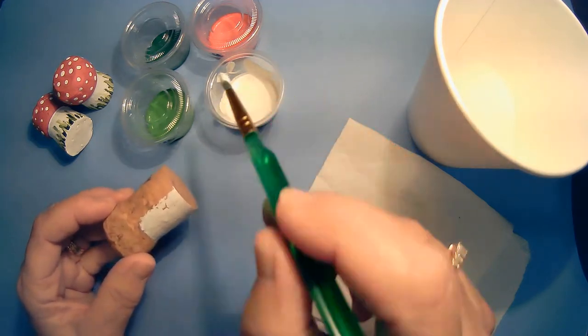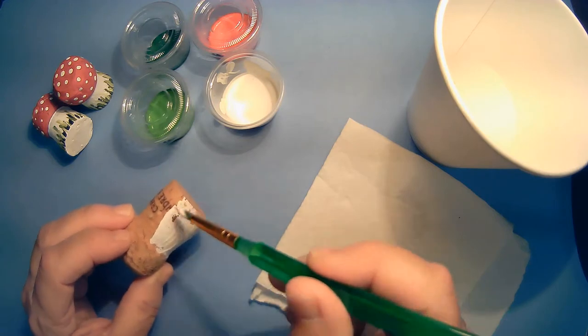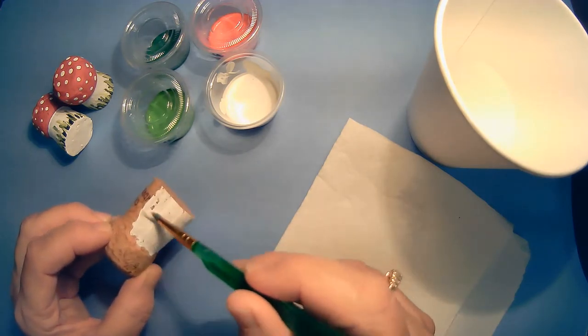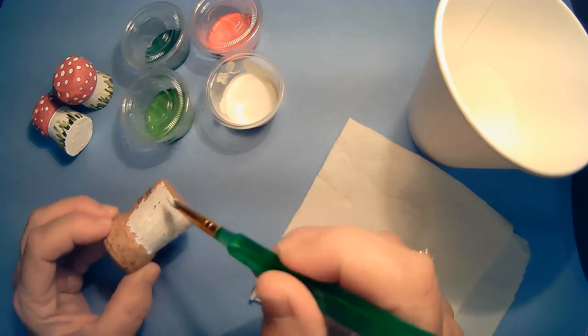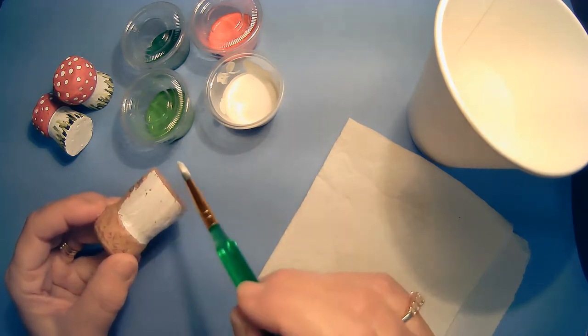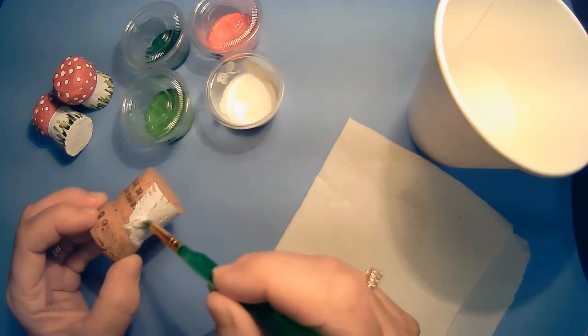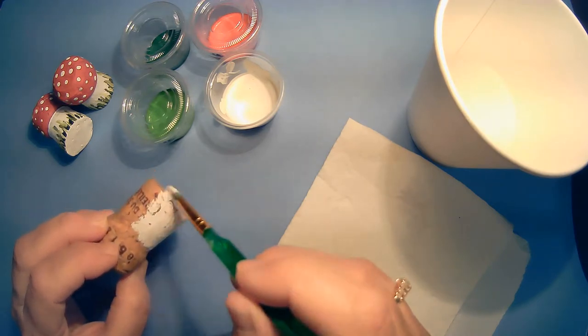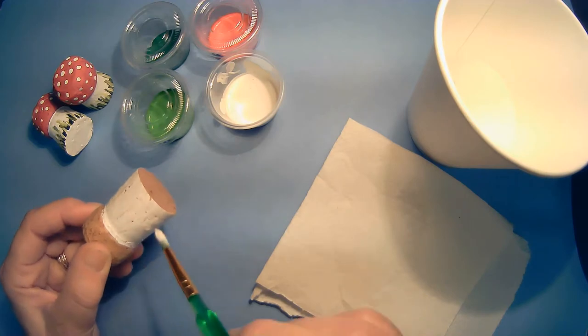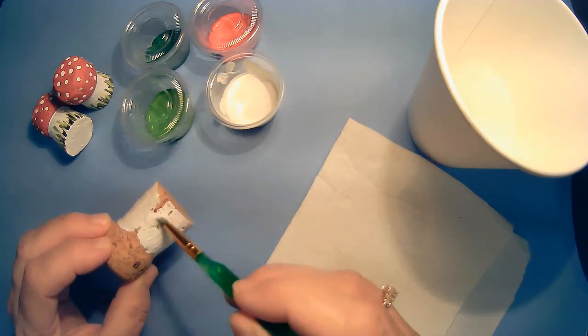And we are going to paint two coats because there is some writing on our cork. And in order for the paint to cover that we need to paint two coats. So let's cover the bottom here with white. We can draw a little line like that to separate because the top part of course is going to be red.